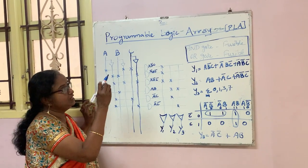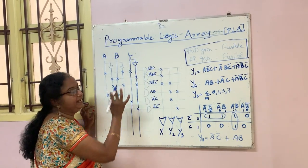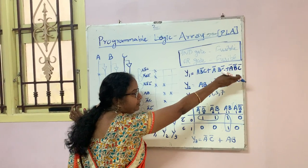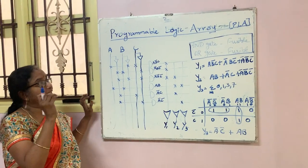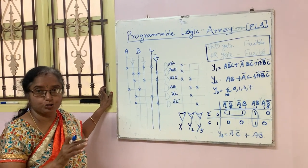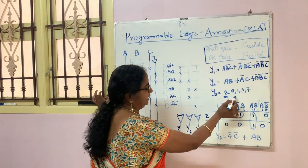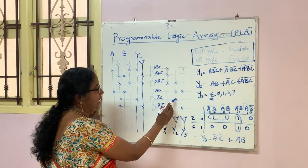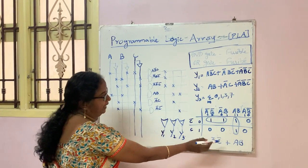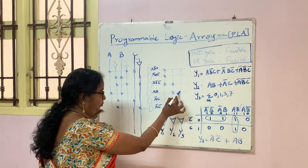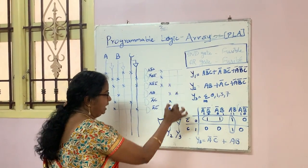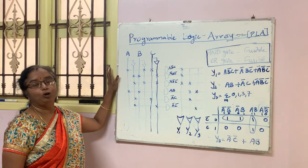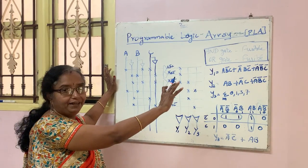In this PLA we are minimizing AND gates — we do not create a separate gate for ĀB̄C̄ since it is already used in Y1. For Y3, we have ĀC̄ plus AB. We connect ĀC̄ and AB — AB was already derived — and connect them to an OR gate, giving the output Y3. This is about the programmable logic array and how to design it given Boolean equations.